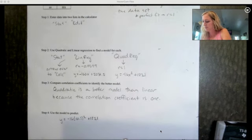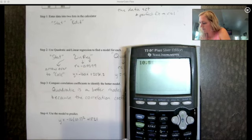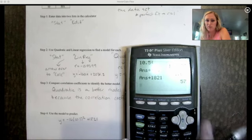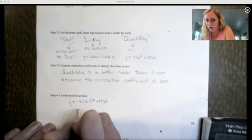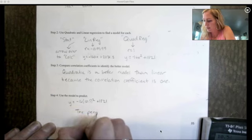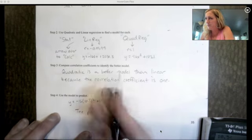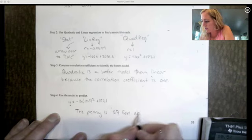We've got 10.5 squared times negative 16 plus 1821. The penny is 57 feet above the ground. I'm going to use context here: the penny is 57 feet above the ground after 10 and a half seconds.